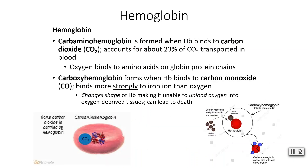Oxygen is not the only thing that can bind to hemoglobin. Carbaminohemoglobin is formed when hemoglobin binds to carbon dioxide instead — CO2. This accounts for about 23% of the carbon dioxide that is transported through the blood, leaving quite a bit of additional CO2 to be transported in a different way. Carbon dioxide binds in a different place — oxygen binds to amino acids on the globin protein chains, while carbon dioxide just binds to a different location.